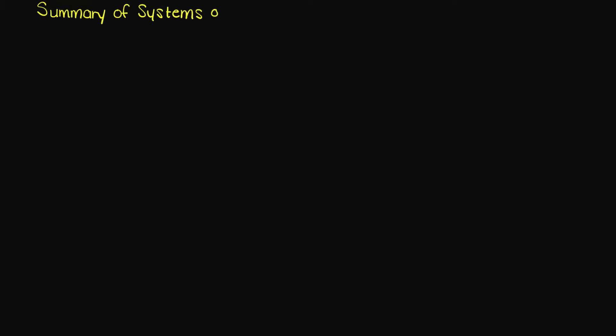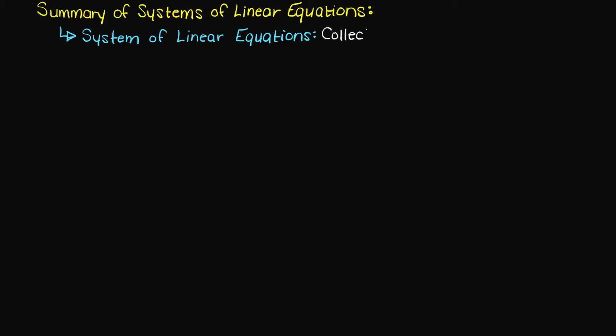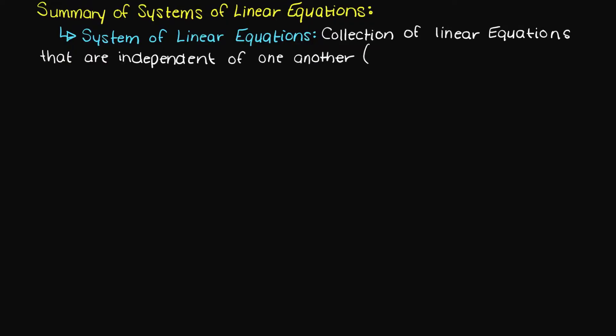Hi everyone. In many of the future numerical methods videos we are going to be dealing with systems of linear equations, so I figured it would be wise to cover a summary of what they are. A system of linear equations is just a collection of linear equations that are independent, which means that we can't derive one from another with basic math operations.